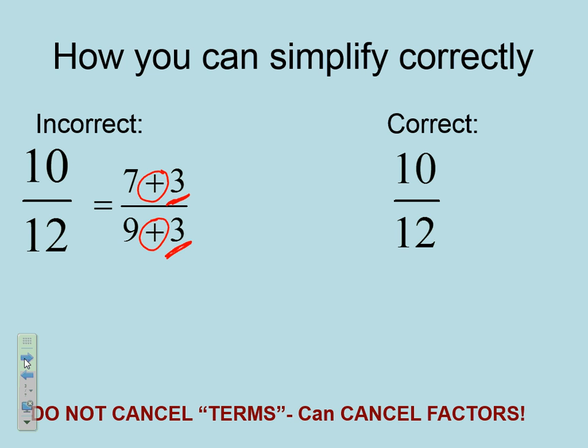Now, the correct way to break down 10 and 12 would be 2 times 5 equals 10, and 2 times 6 equals 12. Now that we are multiplying two things together, we can cancel out our 2's, and if we would simplify 10 over 12, it would be 5 over 6. So, we can't cancel terms, that's like adding and subtracting, but we can cancel factors. So, we're talking about multiplication. That's very important for us to know.